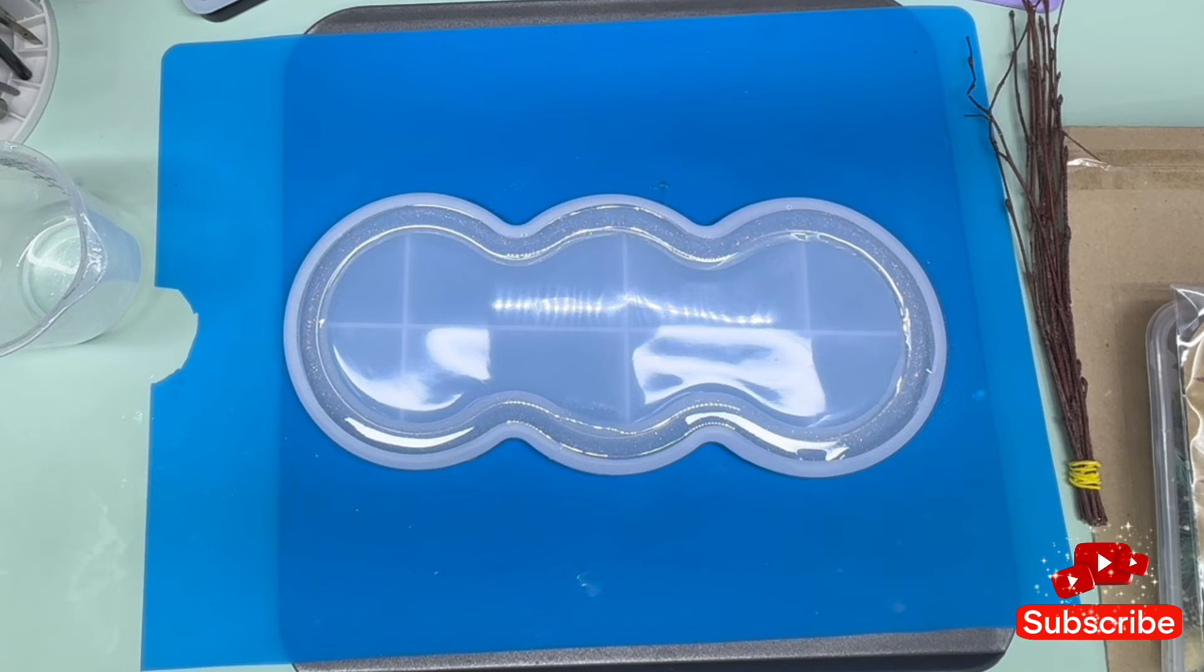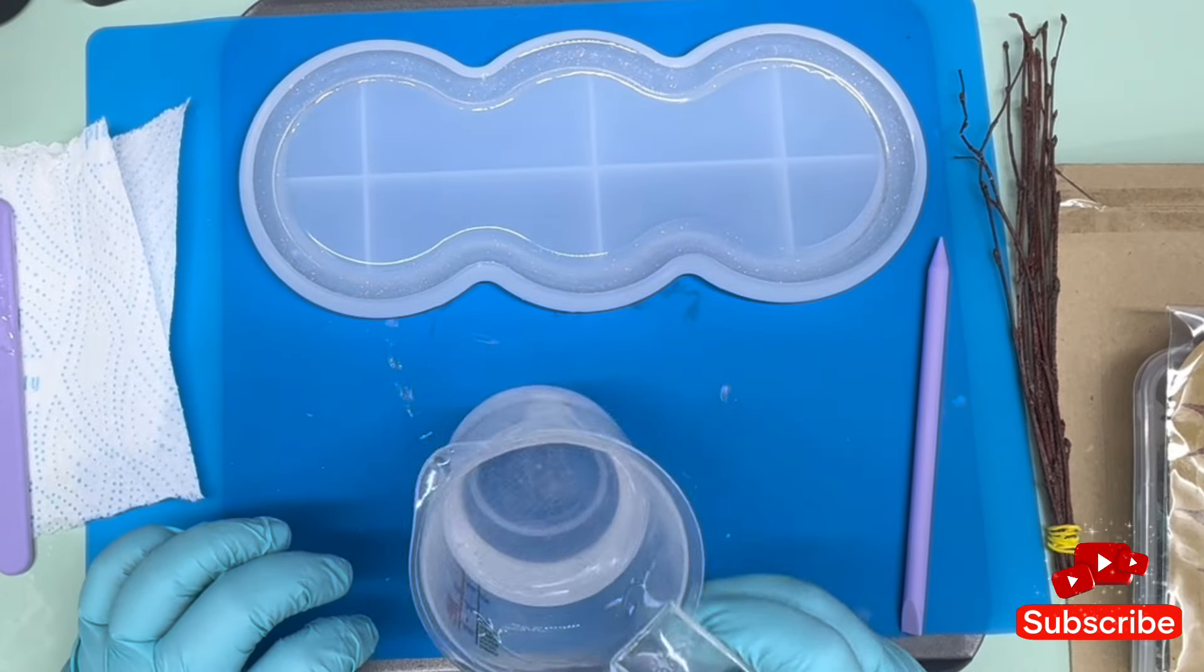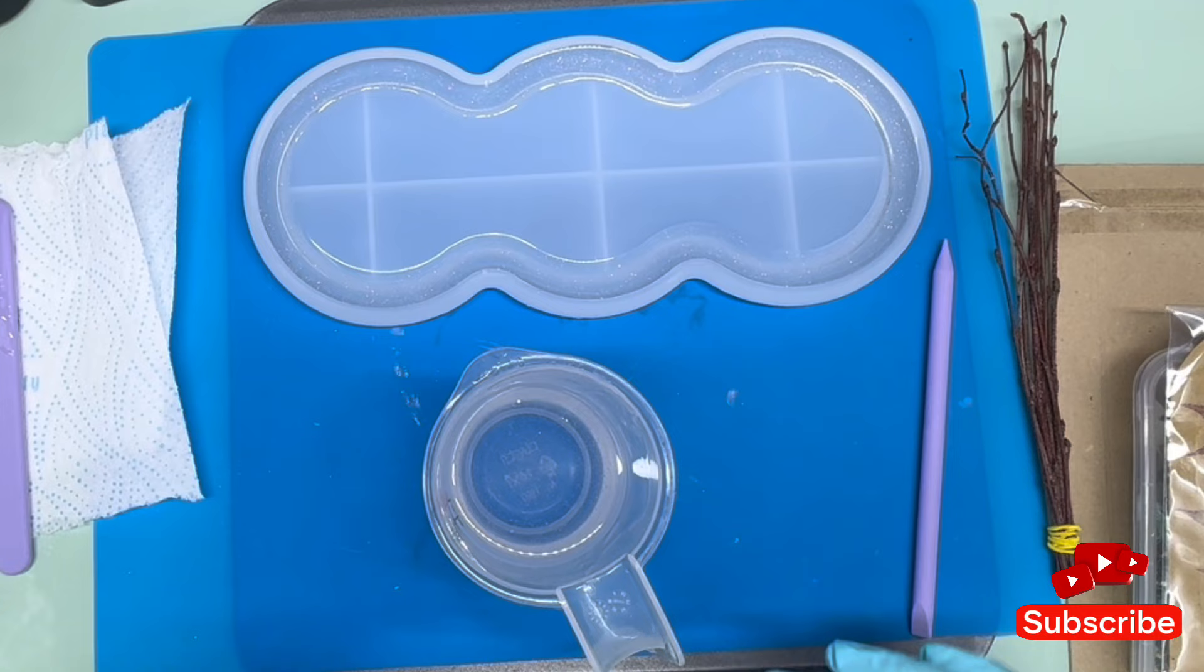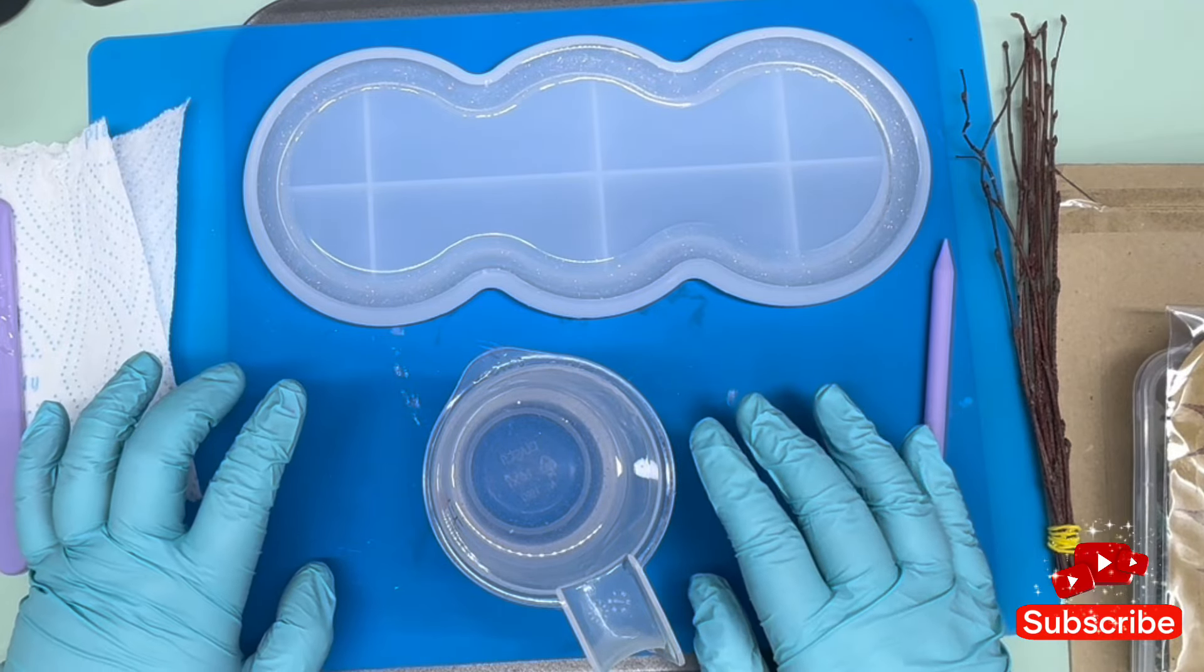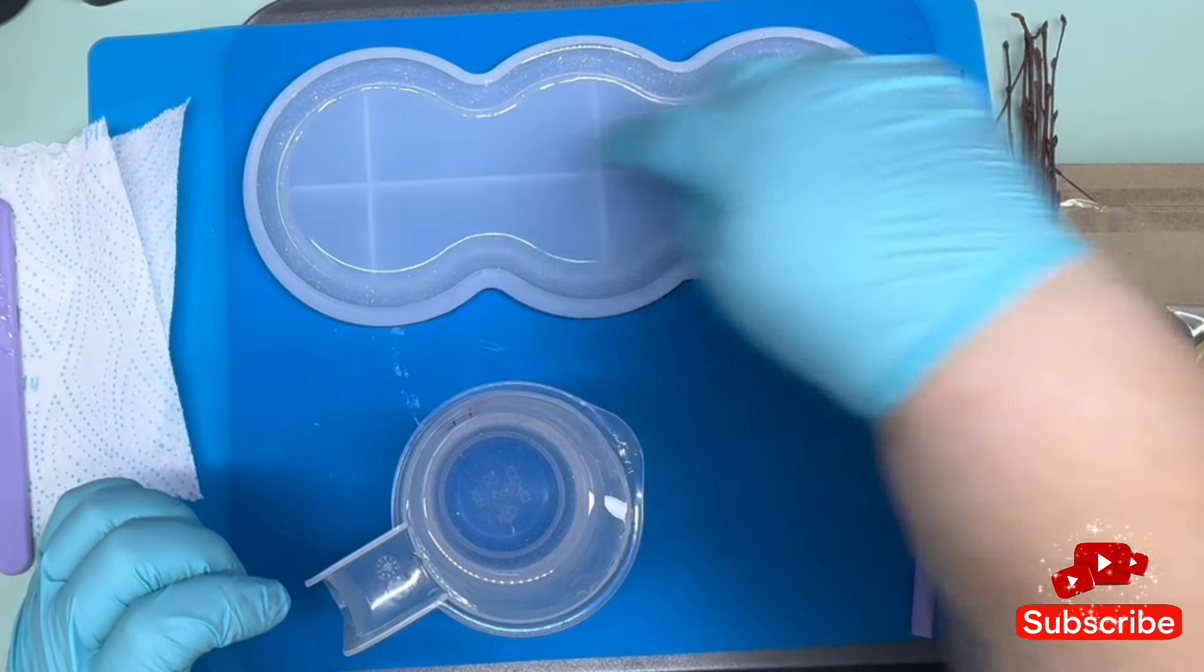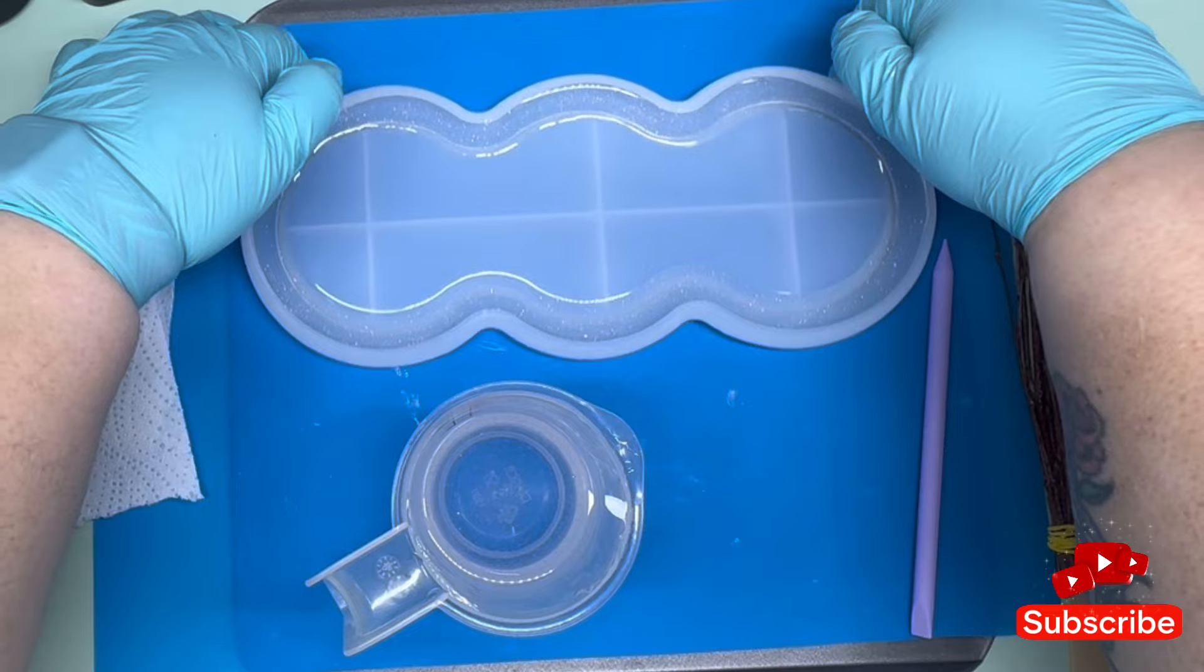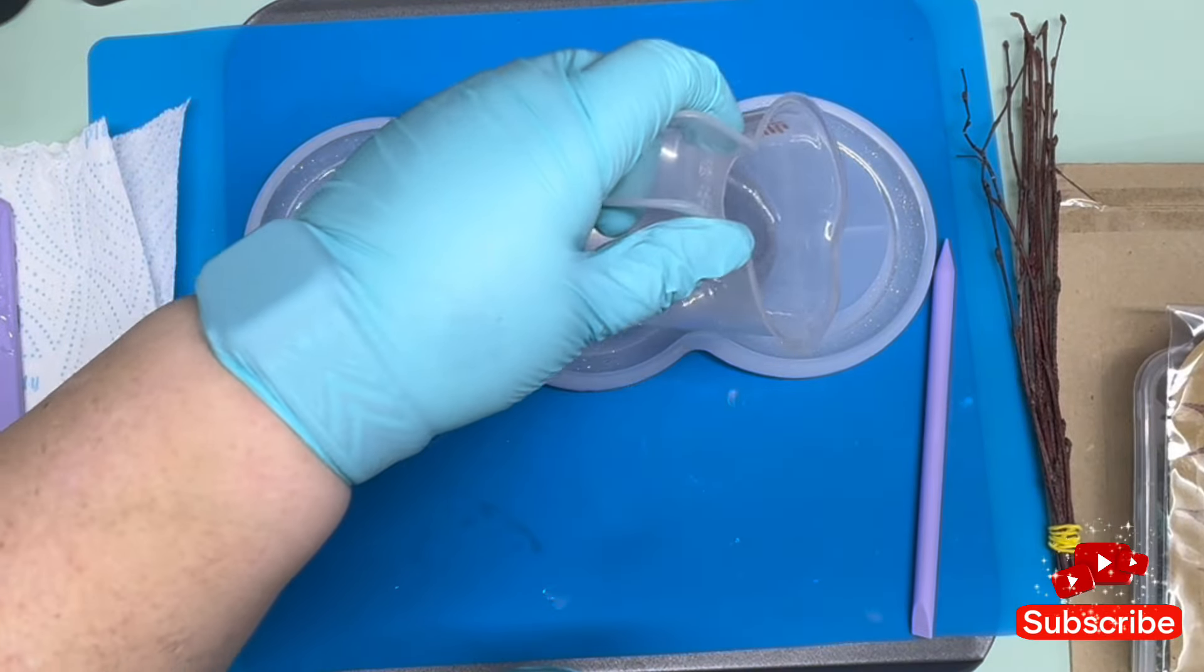So I've mixed up another 100ml, probably overkill again, but I've got a few other things I can finish them on. What I thought I would do now is pour a little bit of this over the top so that it covers that section.